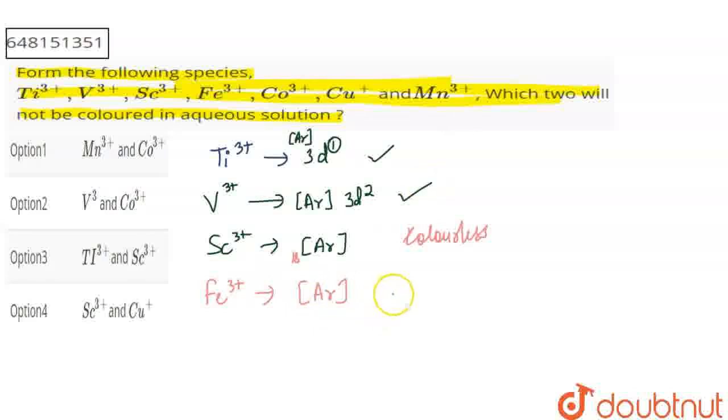We have Fe³⁺, so it is 3d⁵, it is also unpaired, so this will be colored. Next, cobalt 3 positive. Cobalt 3 positive configuration is Ar 3d⁶, so it will have unpaired electrons, so this will be colored.